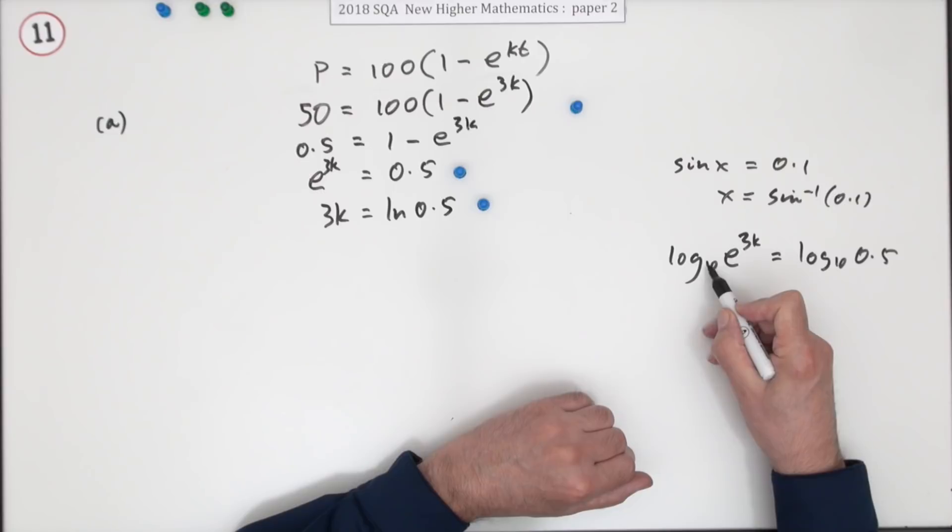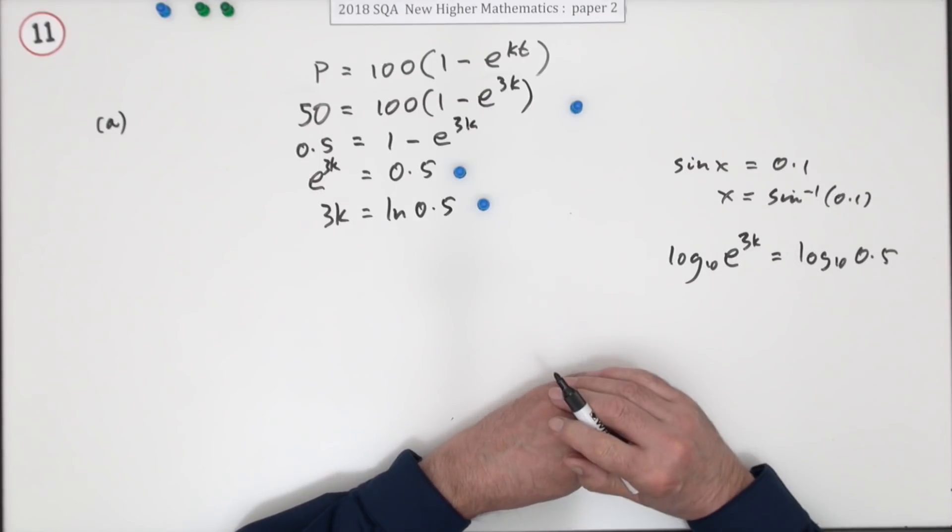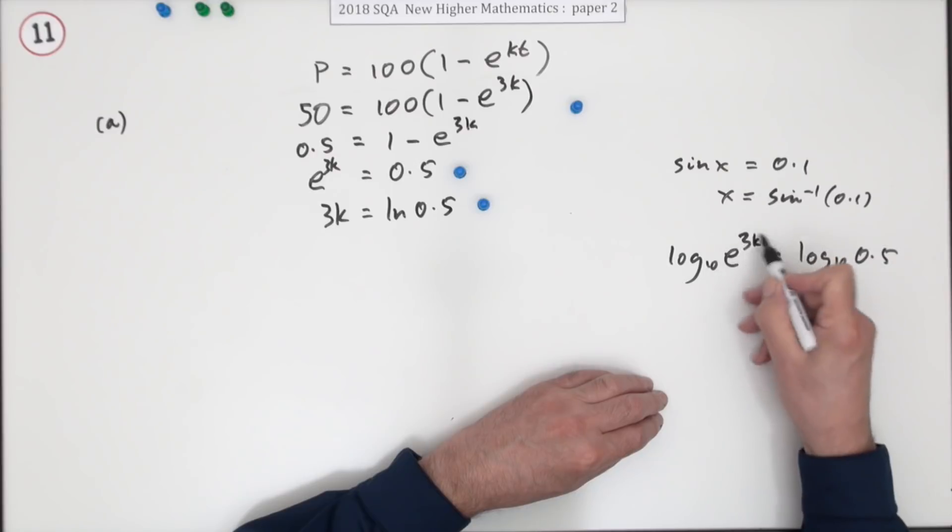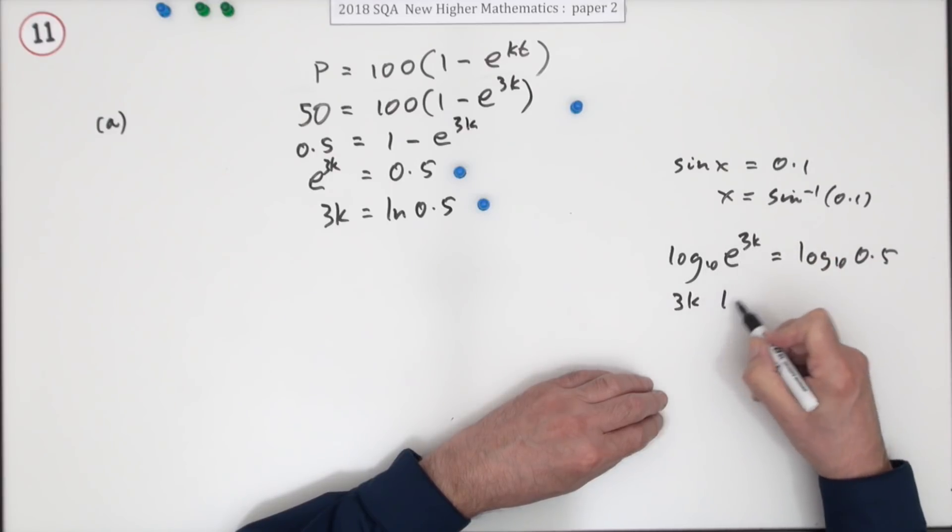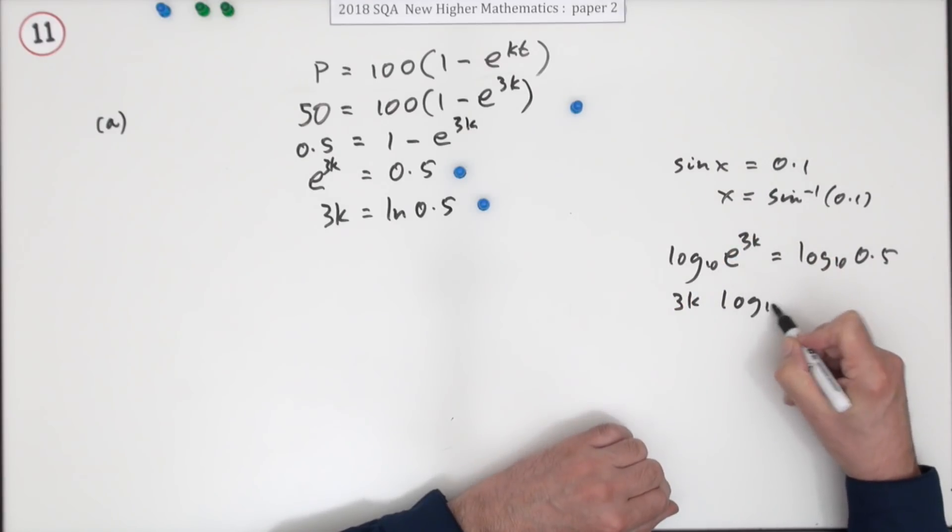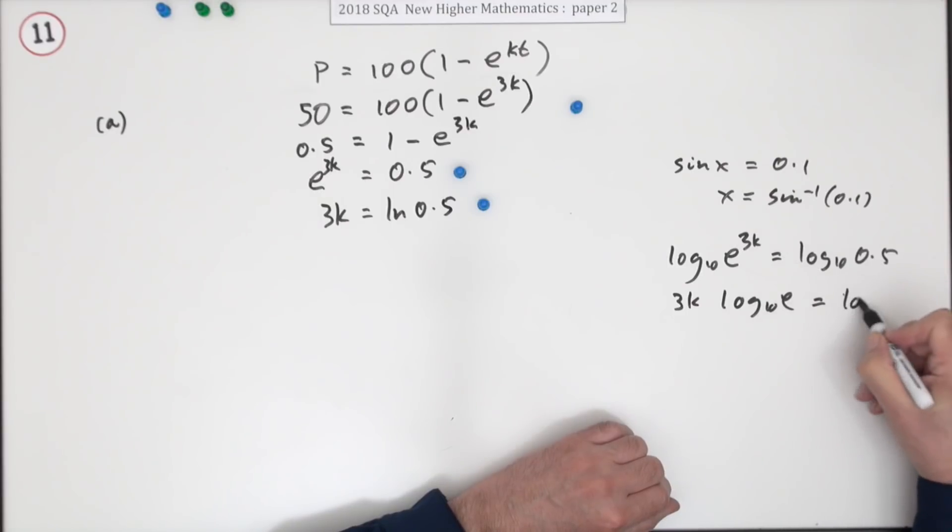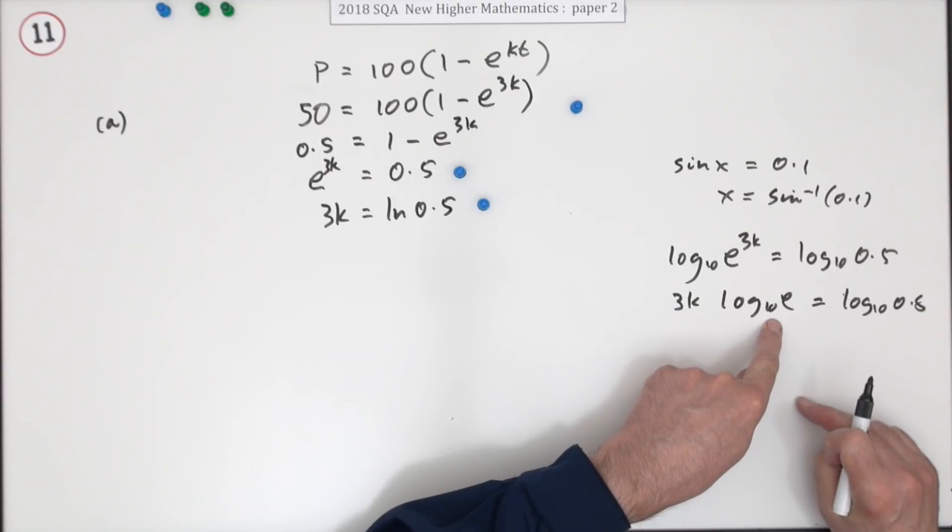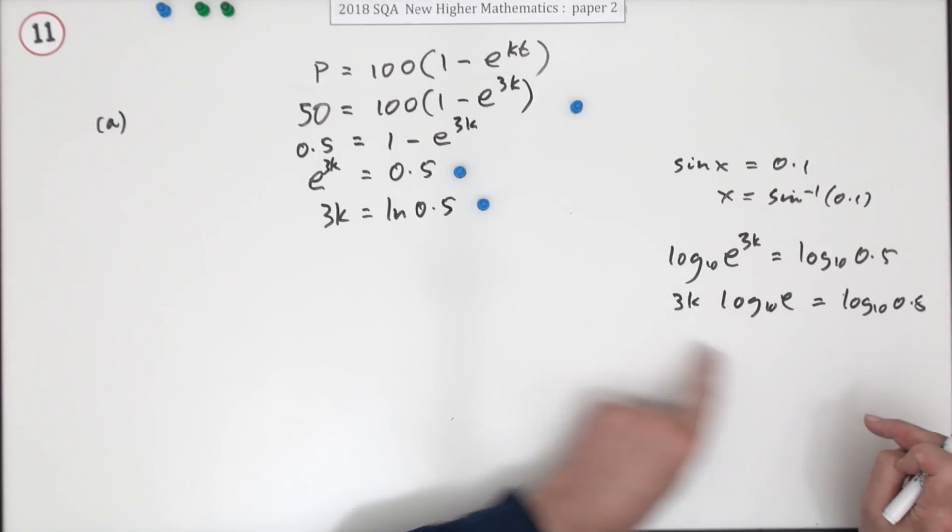You would choose log base e, so it knocks that out, because once you've got a logarithm with a power, that could pop out. The 3k times log base 10 of e is log base 10 of 0.5. And of course that's just a number, you're pressing buttons in your calculator, that's just a number, so then you divide by 3.